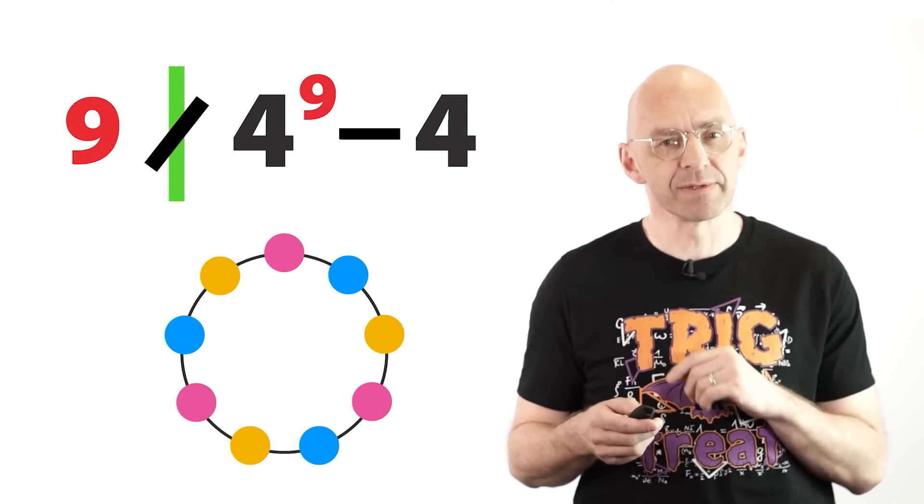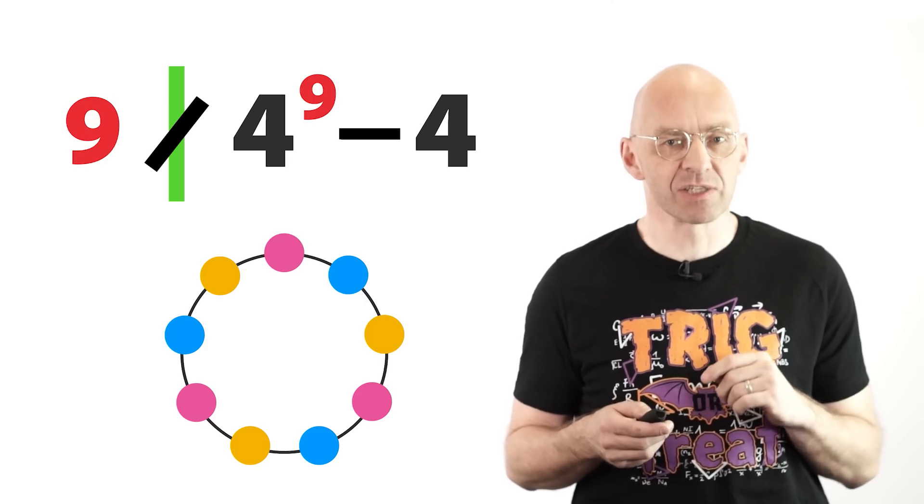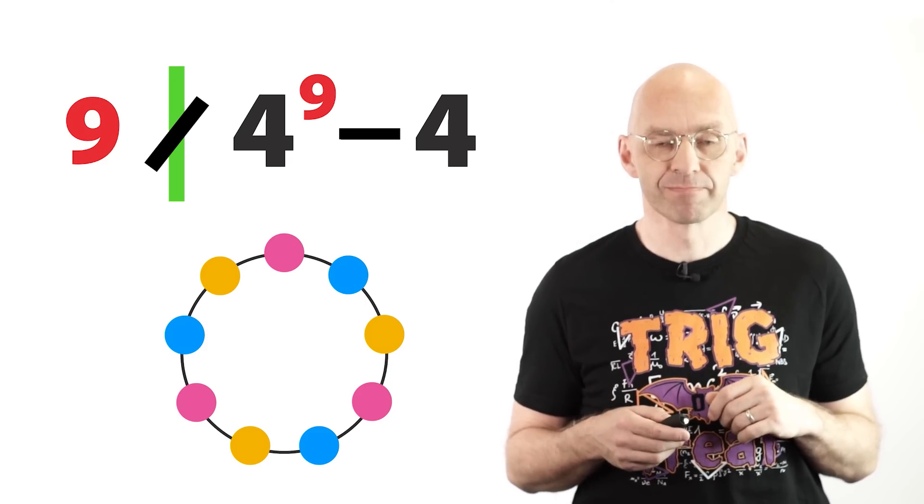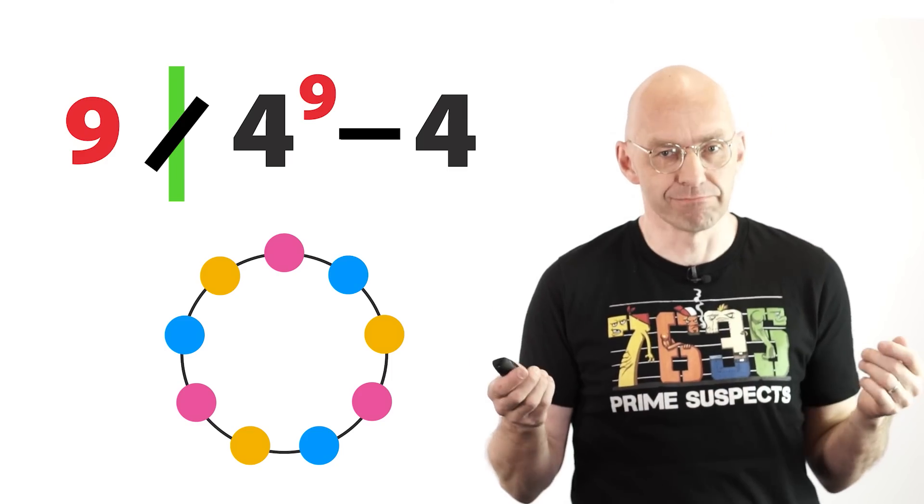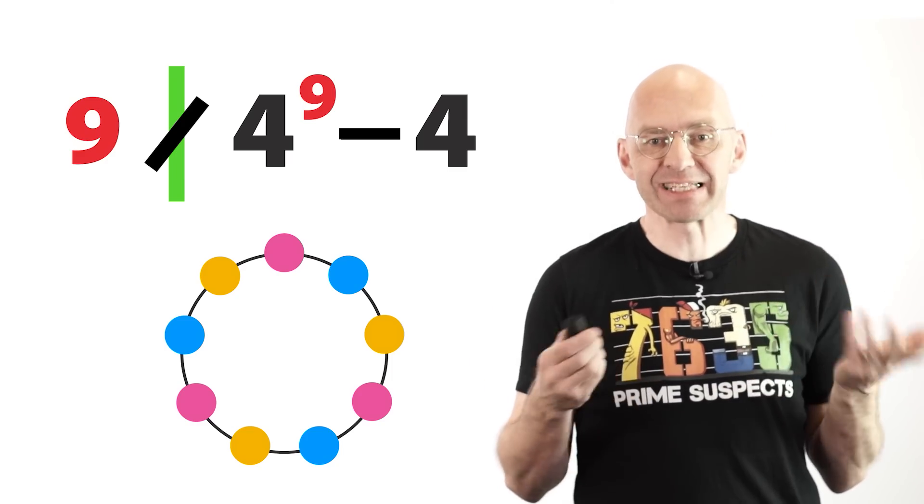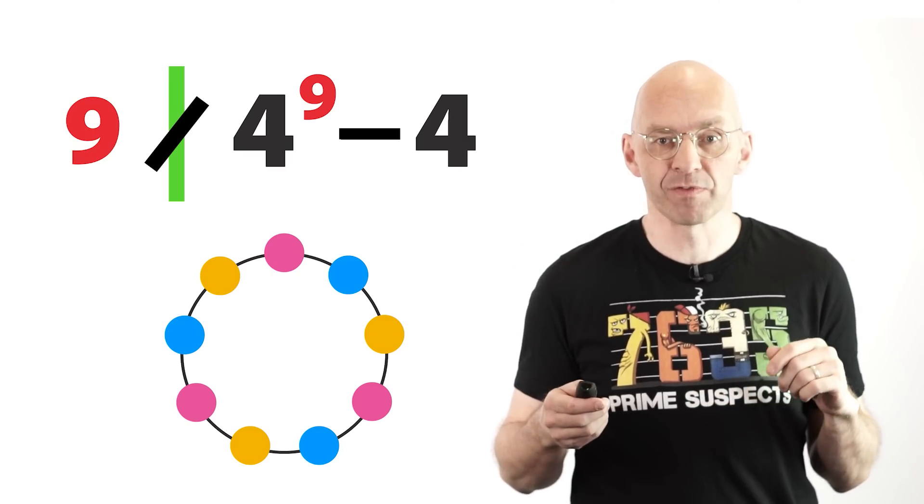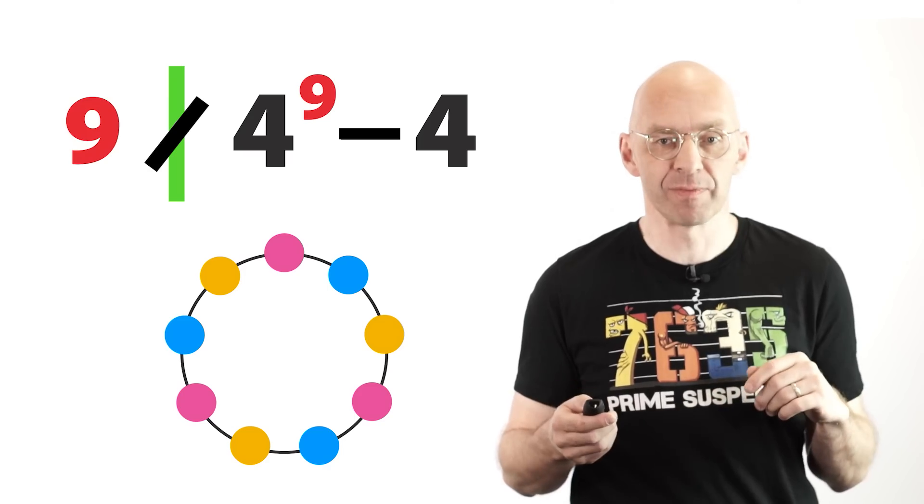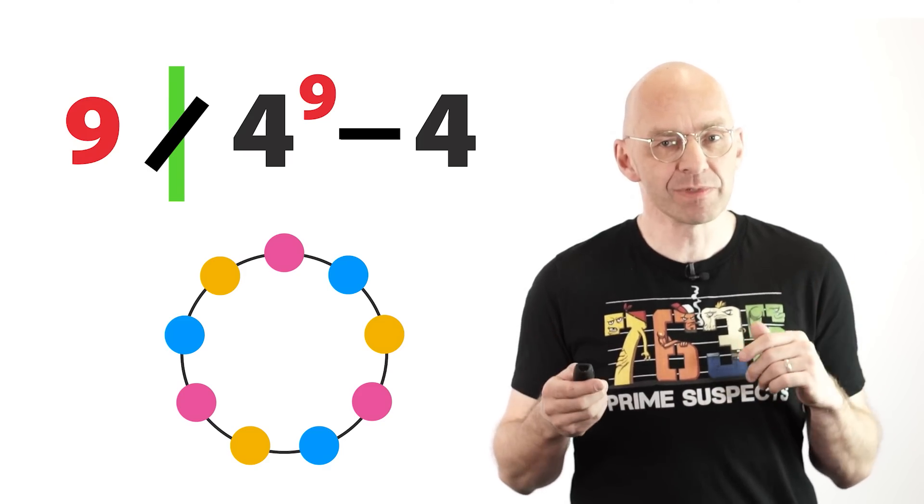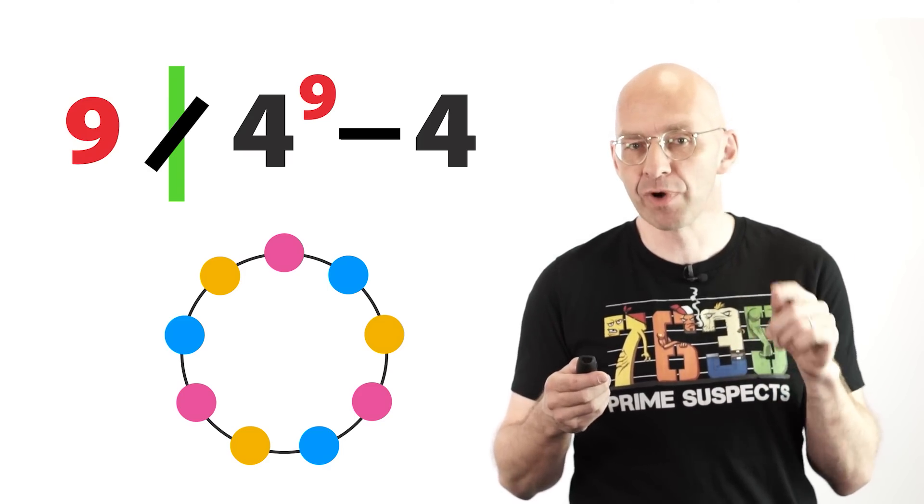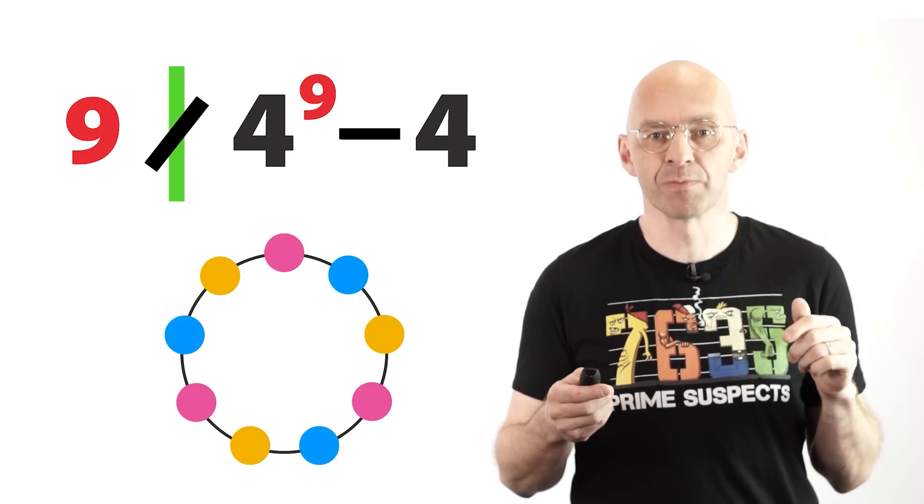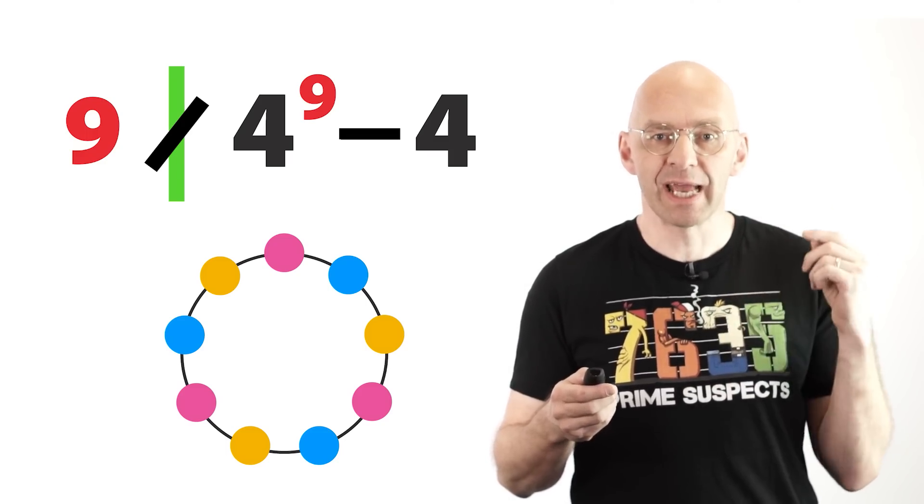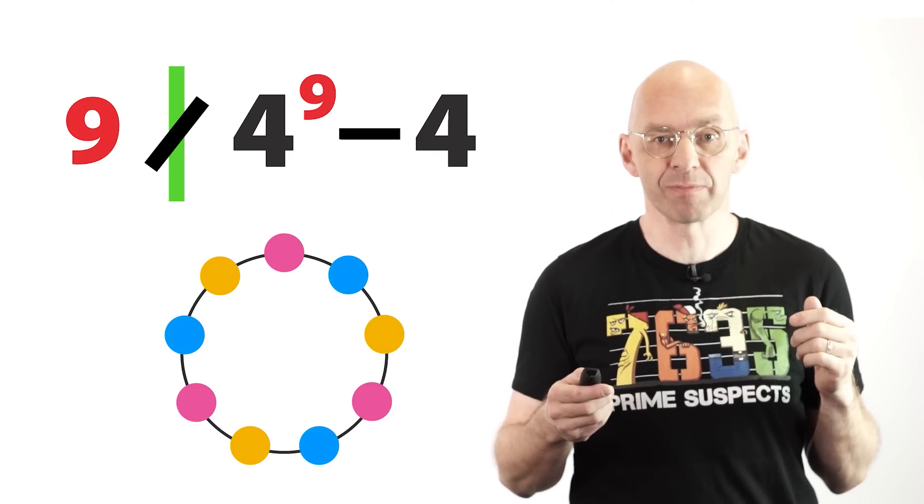But wait a minute. We're actually on to something extra interesting here, which means it's time for another t-shirt. Ta-da! Now, as I was saying, 9 not dividing 4 to the power of 9 minus 4 is also interesting and leads to our first application of Fermat's little theorem. Fermat's little theorem tells us that if 9 was prime, then 9 would divide 4 to the power of 9 minus 4. But we know that actually 9 does not divide 4 to the power of 9 minus 4.